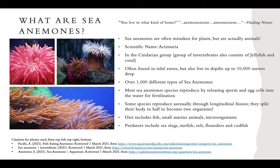Sea anemones are usually found in tidal zones, but they can also live at depths of up to 10,000 meters, so they can truly live in just about any condition or environment. There are over a thousand different species. Most reproduce by releasing sperm and egg cells into the water for fertilization, but some can reproduce asexually through longitudinal fission — they actually split their body in half into two separate organisms, essentially cloning themselves.